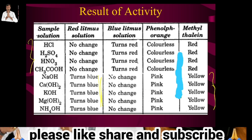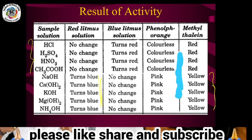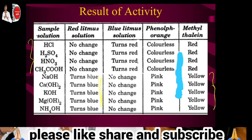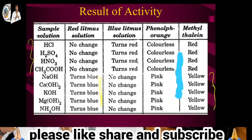When phenolphthalein is added to bases like NaOH, calcium hydroxide, or magnesium hydroxide, a pink color is observed — that solution is confirmed as a base. If methyl orange is added to a solution and it turns yellow color, it is confirmed that it is a base.